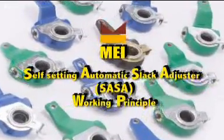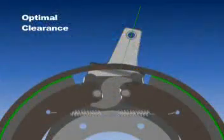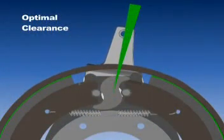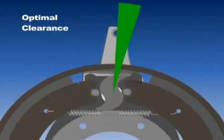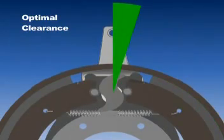MEI Self Setting Automatic Slack Adjuster is a clearance sensing brake adjuster which maintains optimal clearance between brake lining and brake drum.